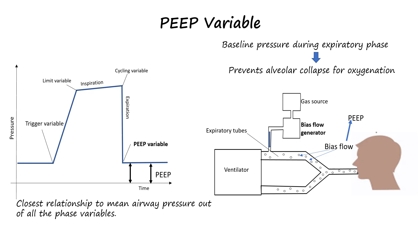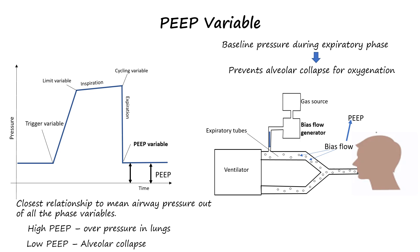Mean airway pressure is a common pressure monitoring parameter of mechanical ventilators that is closely correlated with mean alveolar pressure and represents stresses applied to the lung parenchyma during ventilation. If the applied PEEP is too high it can lead to overpressure of airways, and if too low, the alveoli can collapse and hamper oxygenation. The healthy lung should be ventilated with 5 to 8 cm H₂O of PEEP. The methods of choosing the optimal PEEP in various lung pathologies are discussed elsewhere.